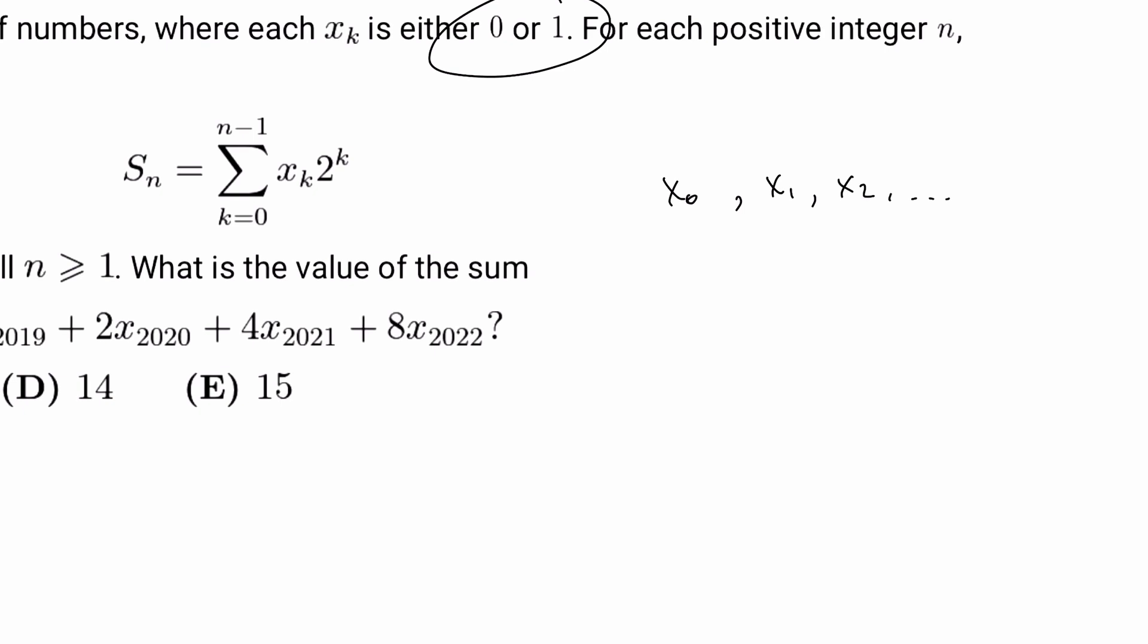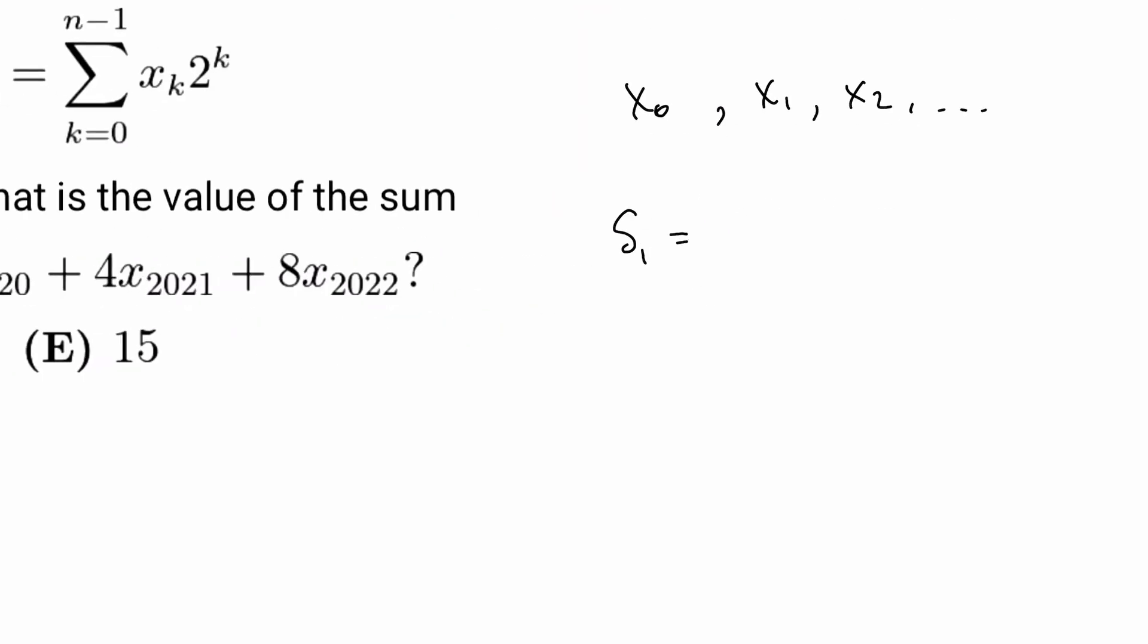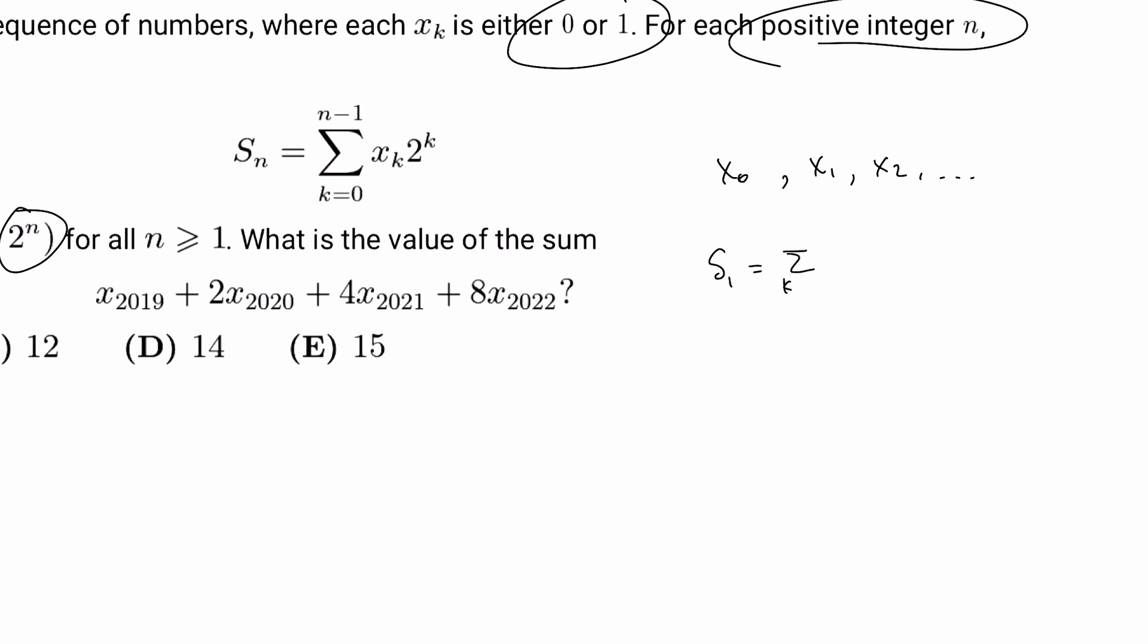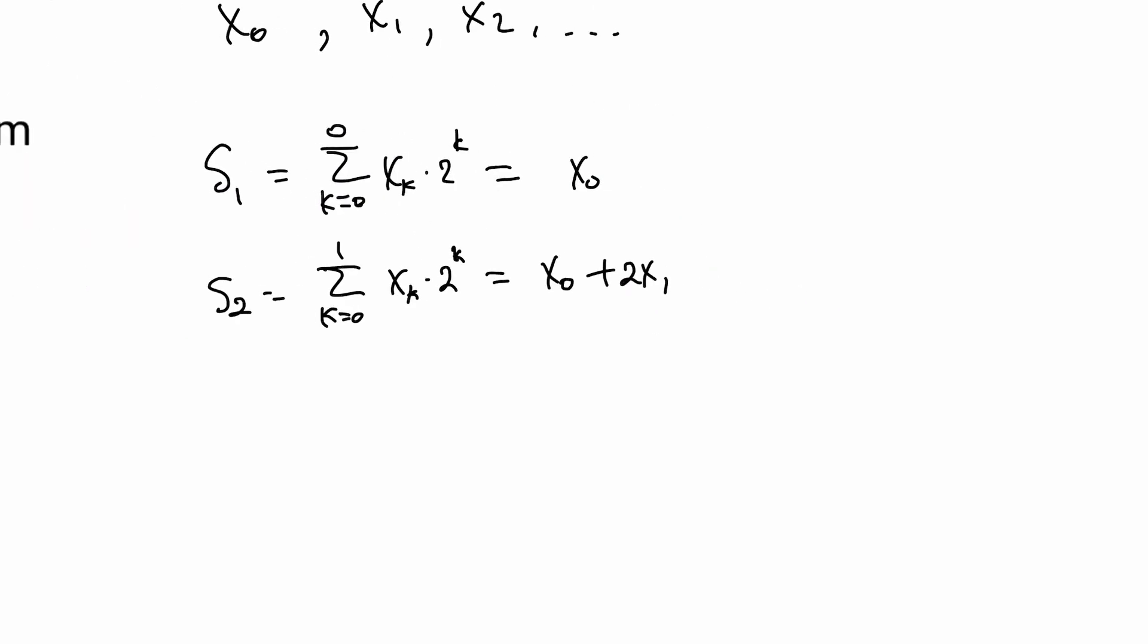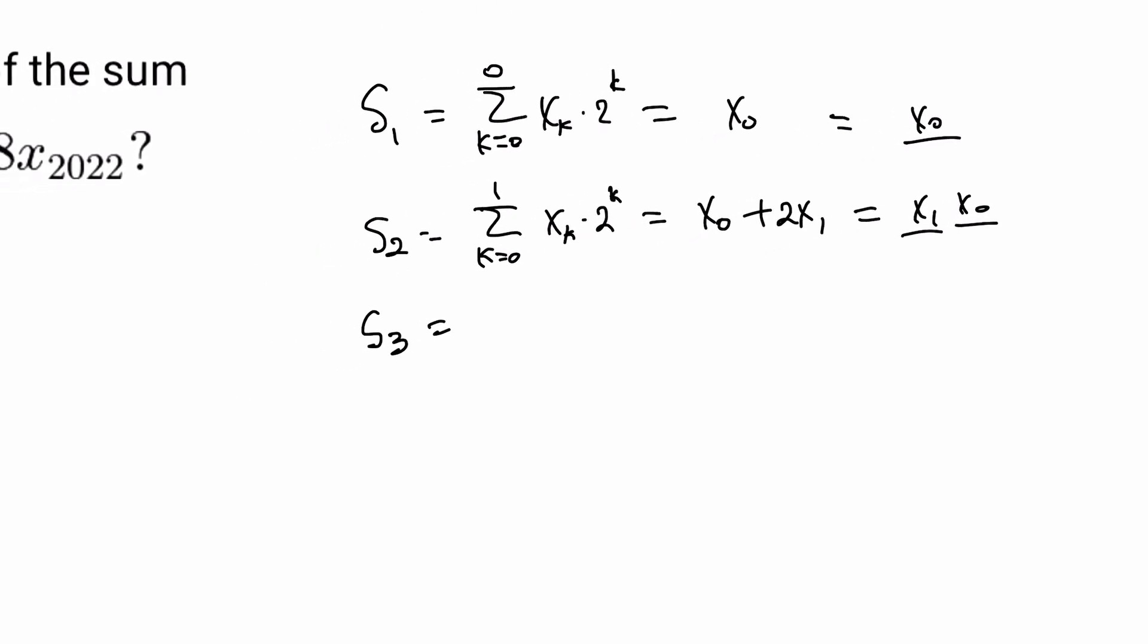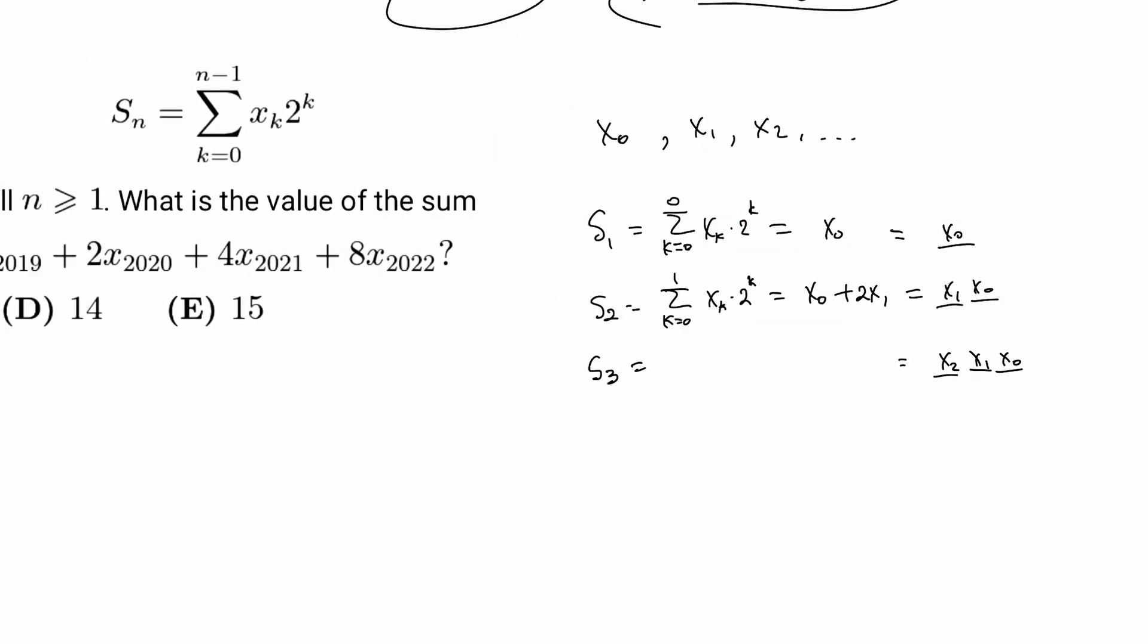So let's take a look at what we have. S1 is the sum of k equals 0 to 0 of xk times 2 to the k, which is simply x0 times 2 to the 0, which is 1. S2 is the sum from k equals 0 to 1, xk times 2 to the kth power, which is x0 plus 2x1. If you write it in binary, this is x1x0 as a number. And S3 would be x2x1x0 as a number.